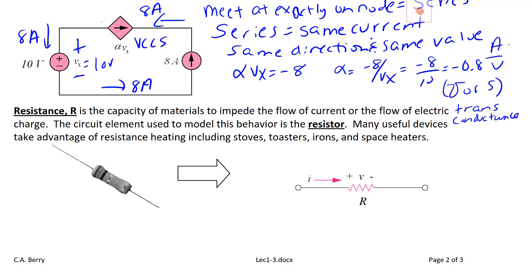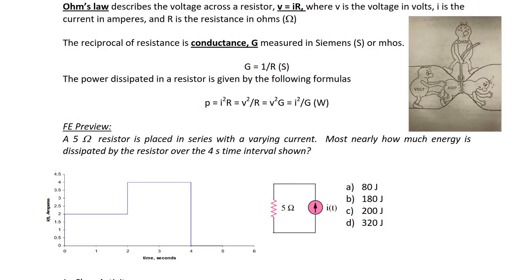Resistance is the capacity of materials to impede the flow of current or the flow of electric charge. The circuit element used to model this behavior is the resistor. Many useful devices take advantage of resistance, including stoves, toasters, irons, and space heaters. Ohm's law describes the voltage across a resistor as V equals I times R, where current goes into the positive terminal and out of the negative, V is the voltage in volts, I is the current in amperes, and R is the resistance in ohms.